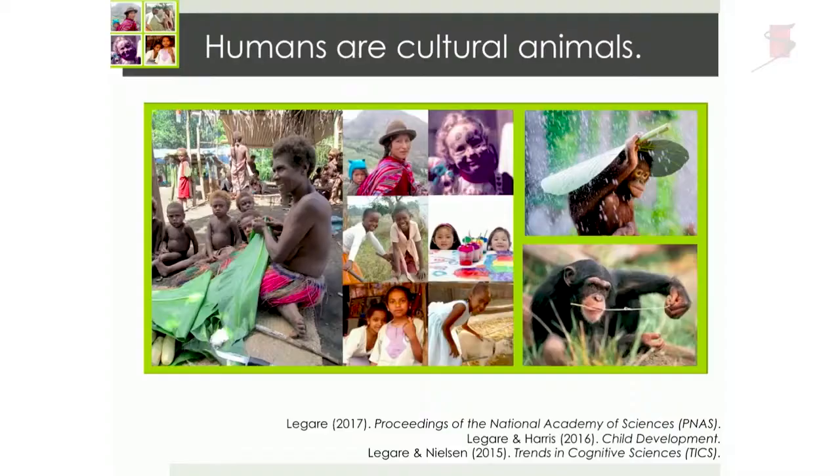My goal here is to provide a bit of a roadmap for some best practice based on my firsthand experience attempting to integrate both psychological and anthropological research. The first thing I want to talk about is why I do cross-cultural comparison. One of the things I've attempted to do in trying to convince experimental psychologists that cross-cultural comparison is important is to emphasize its extraordinary scientific value. I think a lot about the nature of humans as cultural animals — this always gets snickers when I present it to psychologists.